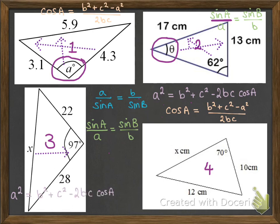And finally, question four. We have got matching pairs there, so we're going to use the sine rule. We're looking for a missing side, so we're going to use the sine rule that has the sides on the top. So that's that blue one there.